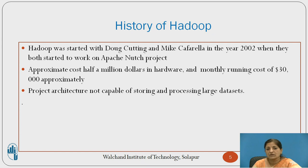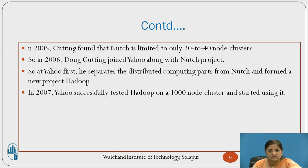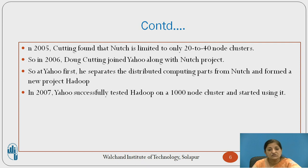Also, the project architecture was not capable of storing and processing large data sets. In 2005, Cutting found that Nutch was limited to run on only 20 to 40 node clusters. So he joined Yahoo along with the Nutch project because Yahoo had a huge team of engineers interested in working on this project. He separated the distributed computing part from Nutch and named it as a new project: Hadoop. Yahoo successfully tested Hadoop on a 1000-node cluster and started using it in 2007.